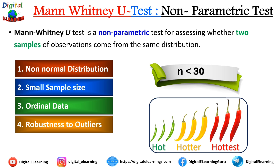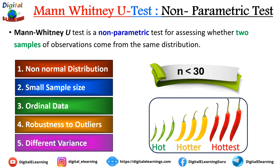The test is robust to outliers: the presence of outliers can skew the results of parametric tests, but since the Mann-Whitney U test compares the median rank, it is less affected by extreme values. Additionally, it does not assume equal variance between groups, making it useful when the homogeneity of variance assumption is violated.